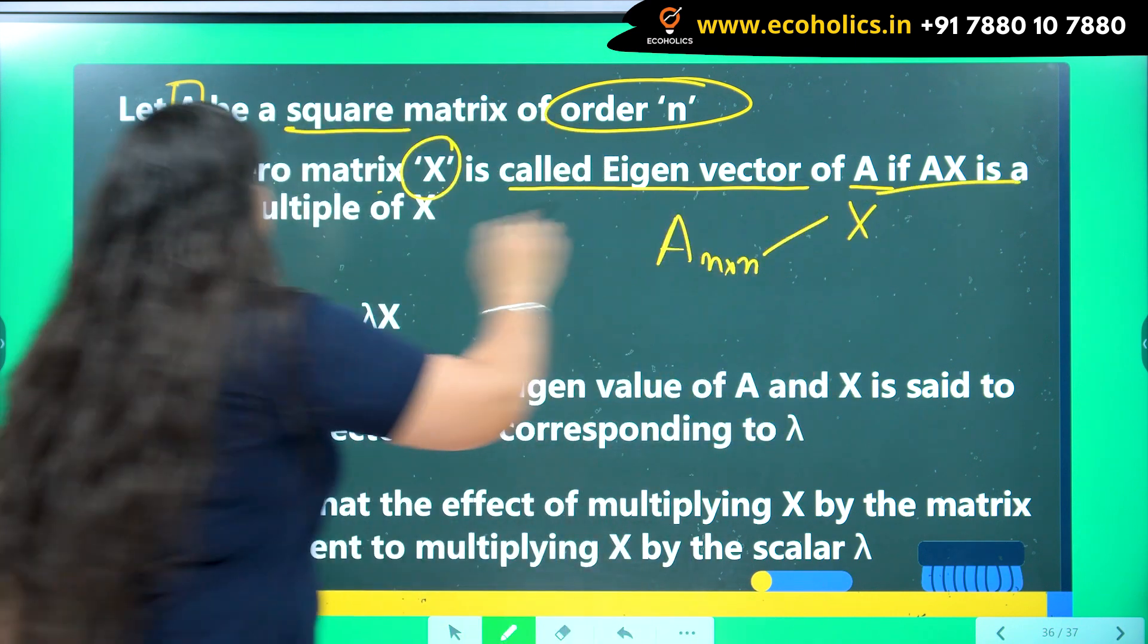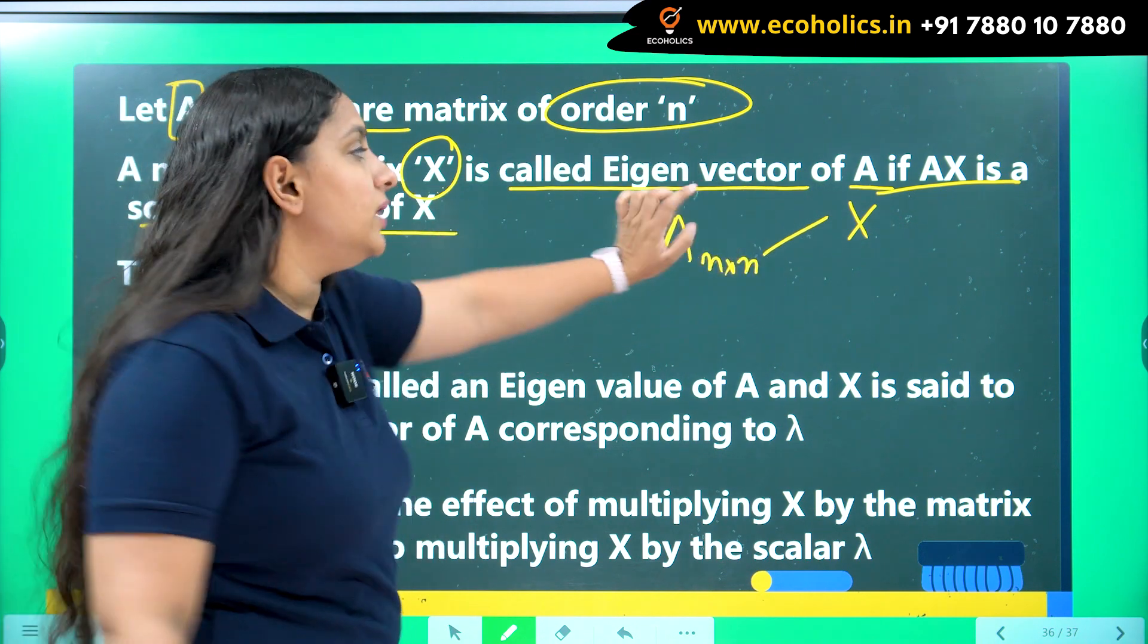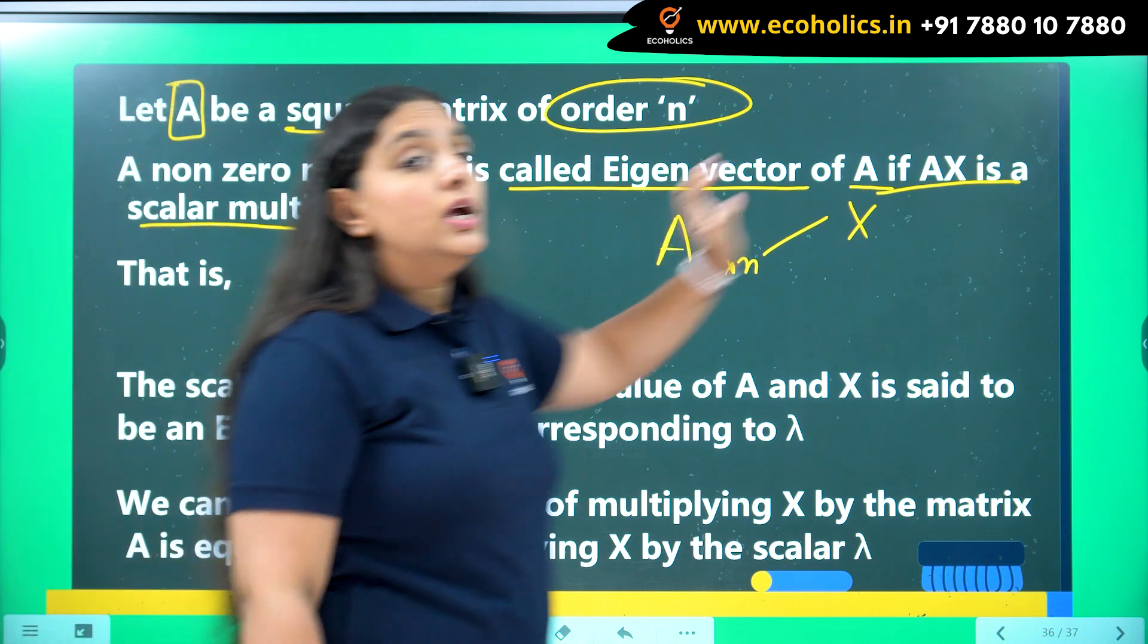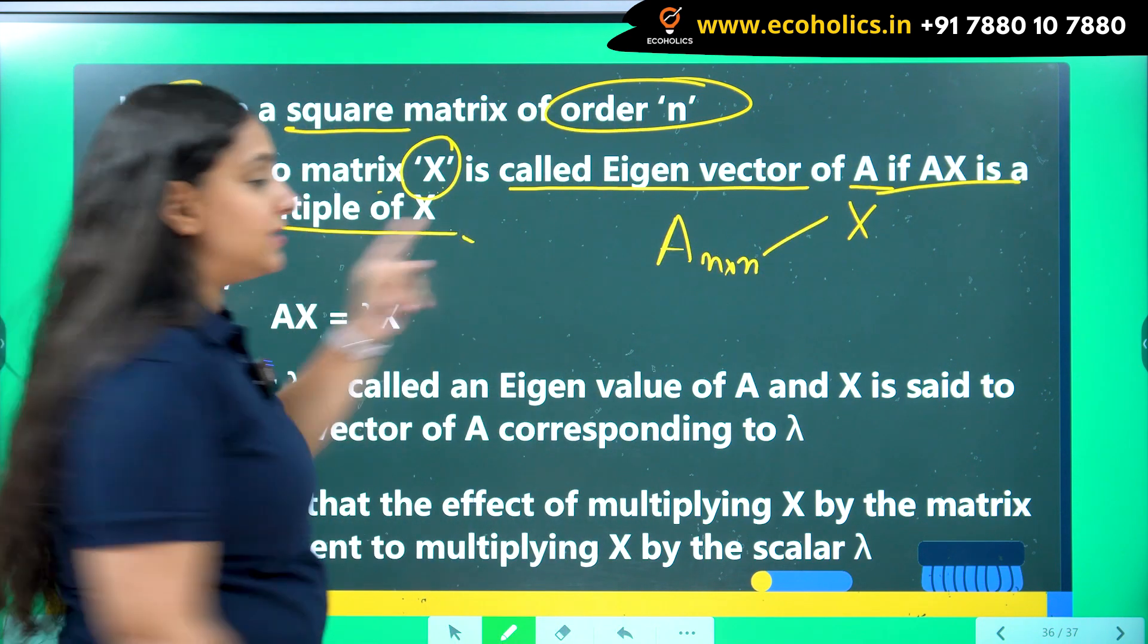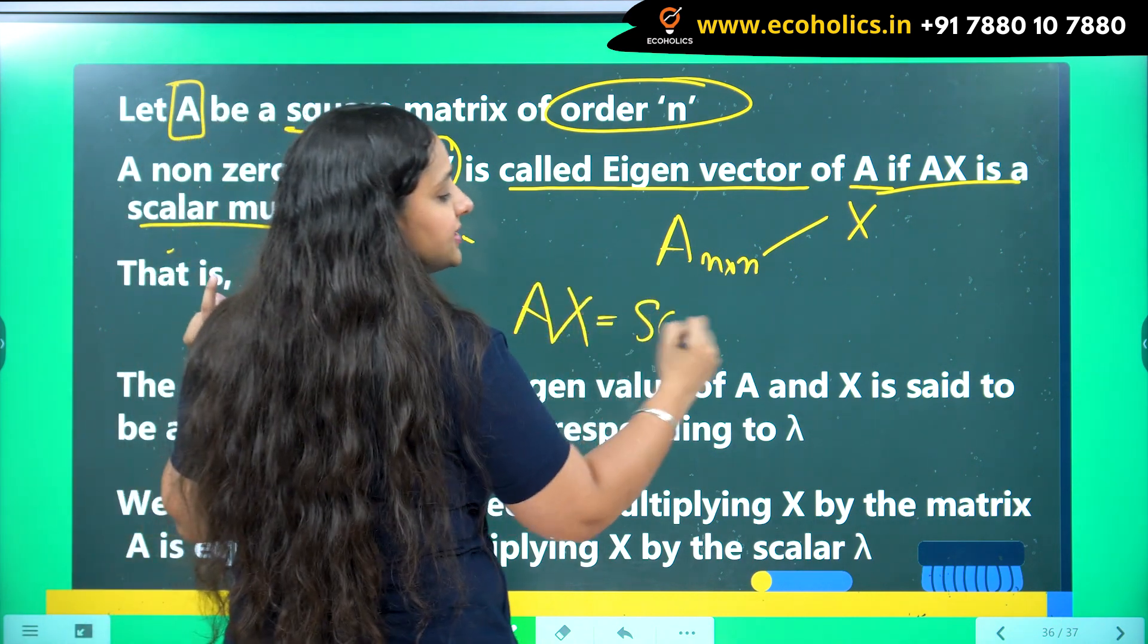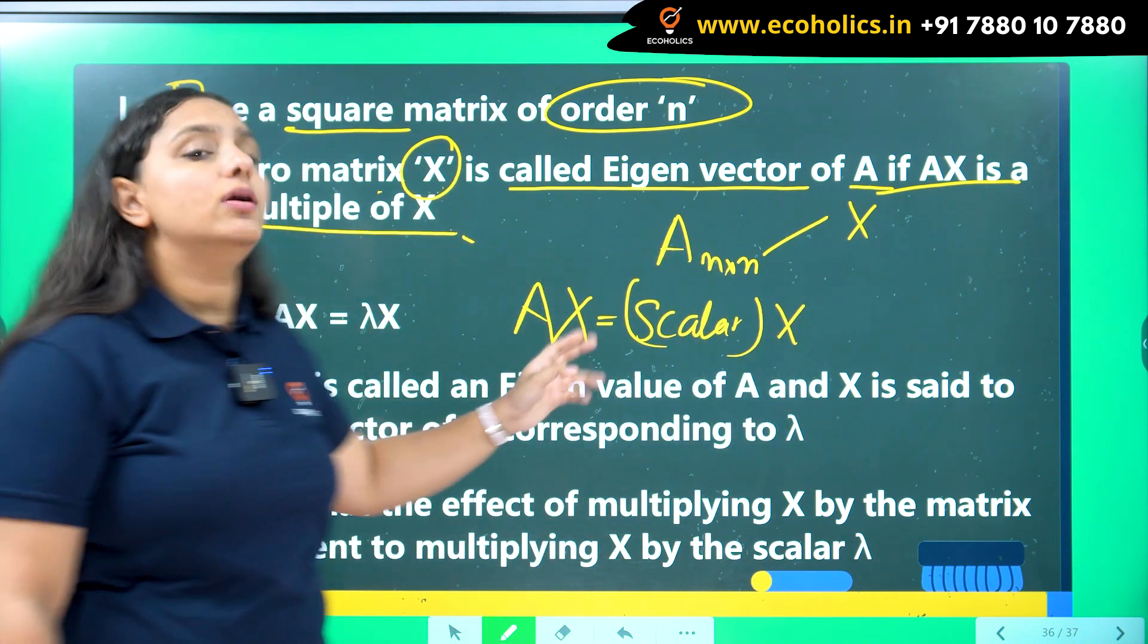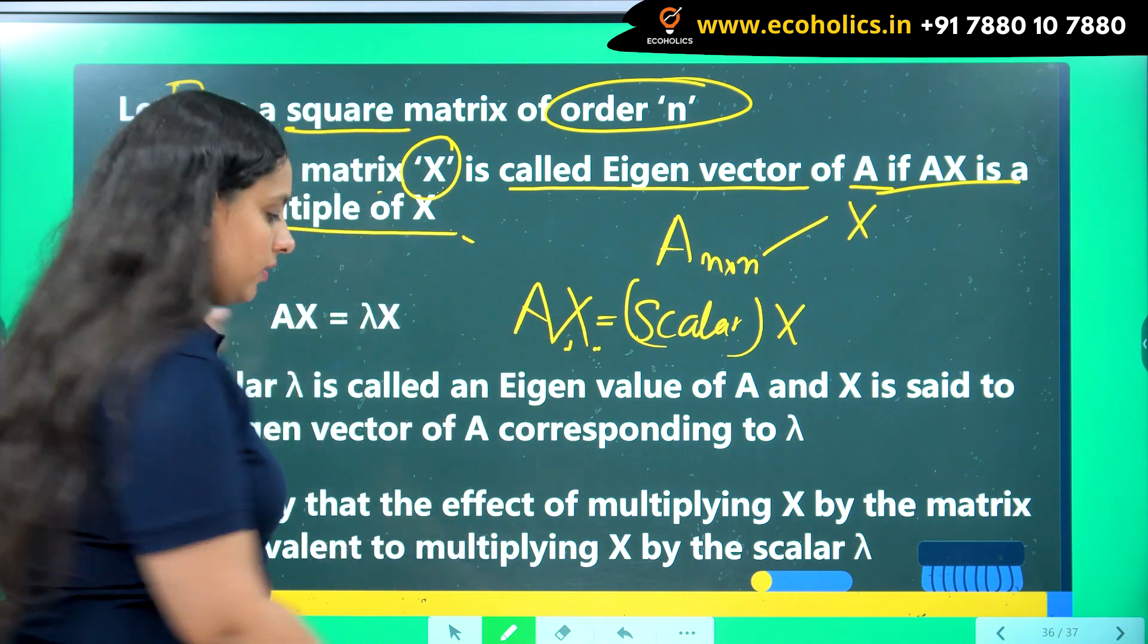Now what does it mean? It means that you will only call X as your eigenvector if AX is going to be a scalar multiple of X. So in other words, if AX is going to be a scalar multiple of X, then only you can call X as your eigenvector of A.